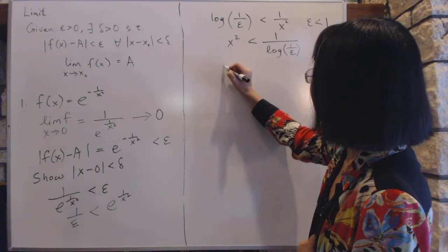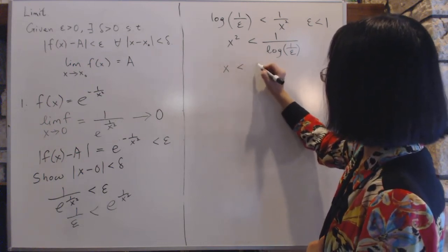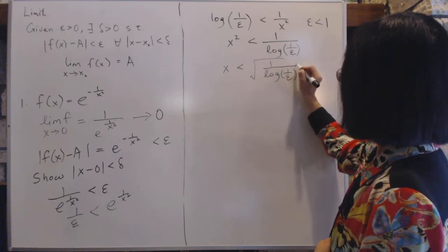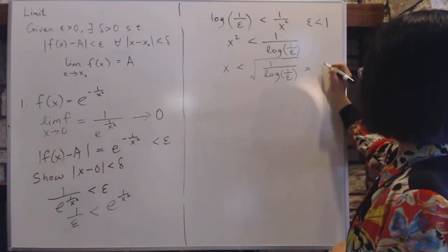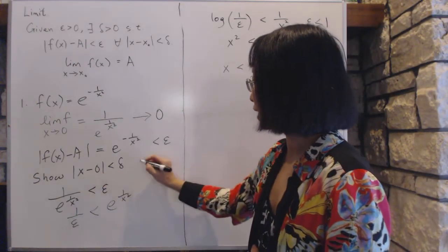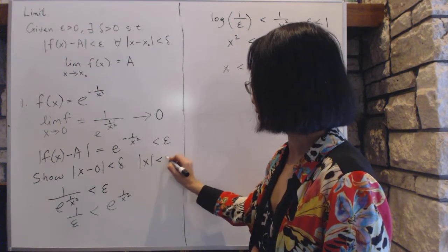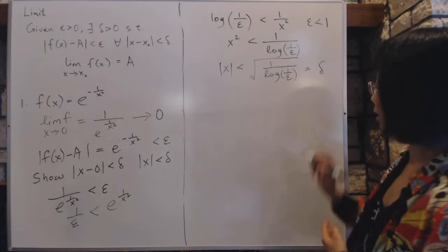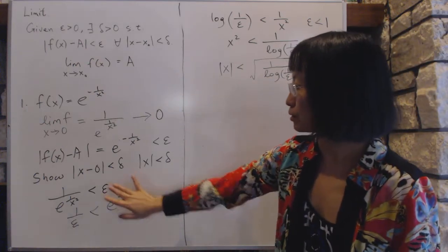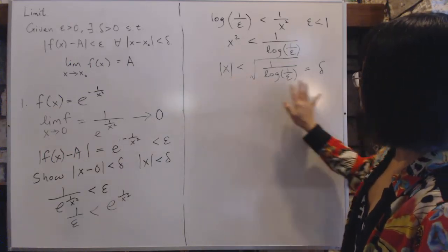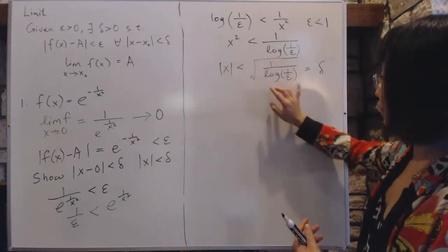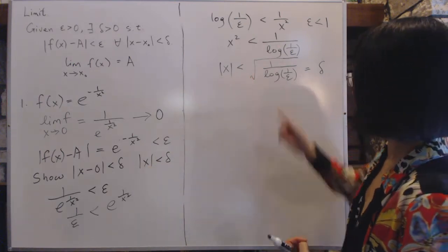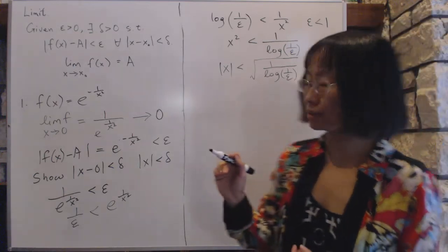Eventually we arrive at x being less than the square root of 1/ln(1/ε), and we set this as delta. The original statement we were trying to show is simply that |x| is less than delta. So as long as |x| is less than this particular value, which we call delta, the definition is satisfied. What you do in this process is just manipulate until you can see how to control |x - x₀|, where x₀ is zero here.